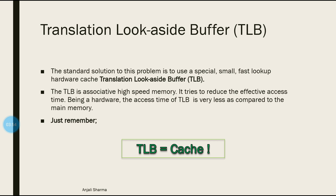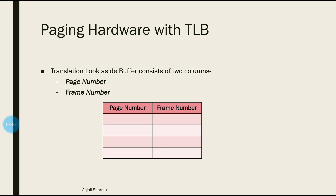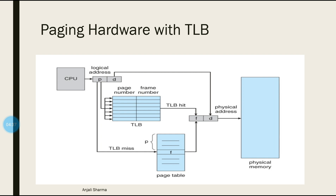The TLB acts as a cache in paging. As for the hardware, the TLB consists of two columns: the page number and the frame number. You can view a TLB as a smaller-size page table — the underlying memory hardware is specialized. It is a replication of the page table data but smaller in size and faster to access, containing only the page number and frame number columns.